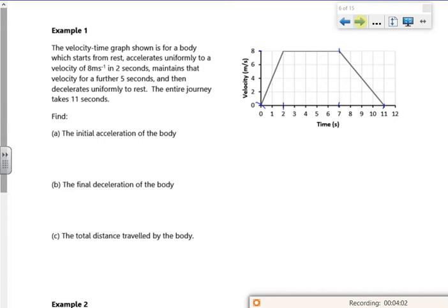So the initial acceleration is from nought to two. So I'm going to look at time nought through to two. So we know that acceleration is velocity over time, it's the gradient. So it'll be eight, because it's gone from nought to eight, on two. So it's going to be four metres per second squared. And that's the gradient of a velocity time.